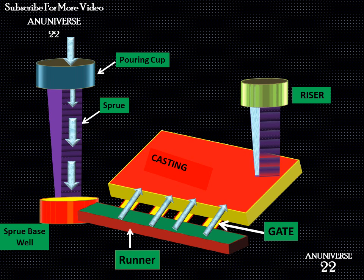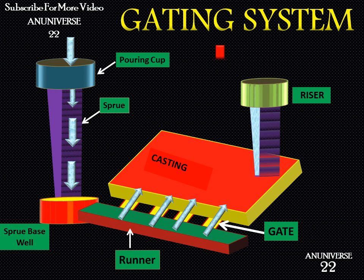So this is the detail about the gating system and all its components as we discussed: pouring cup, sprue, sprue base well, runner, gate, and riser.